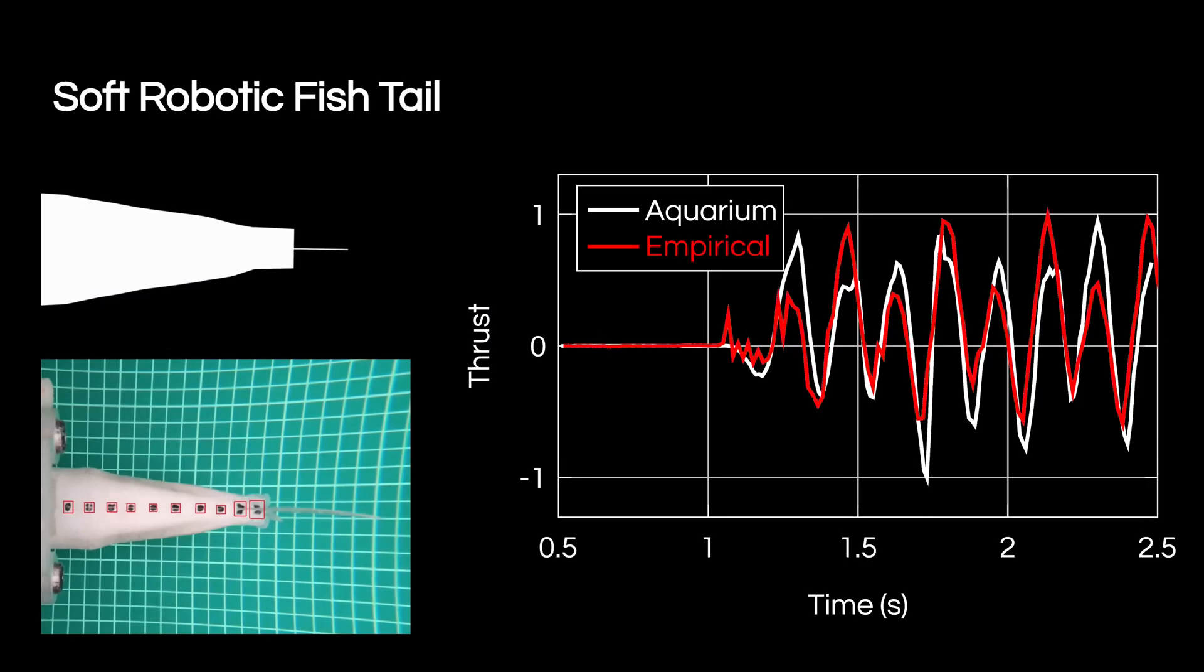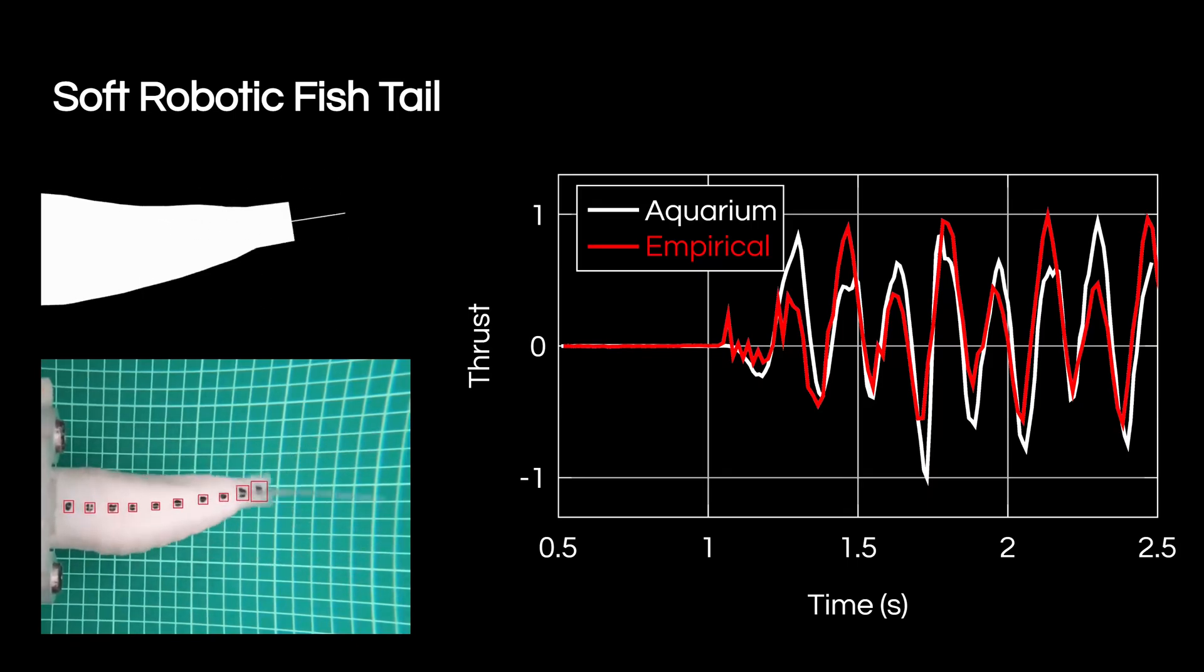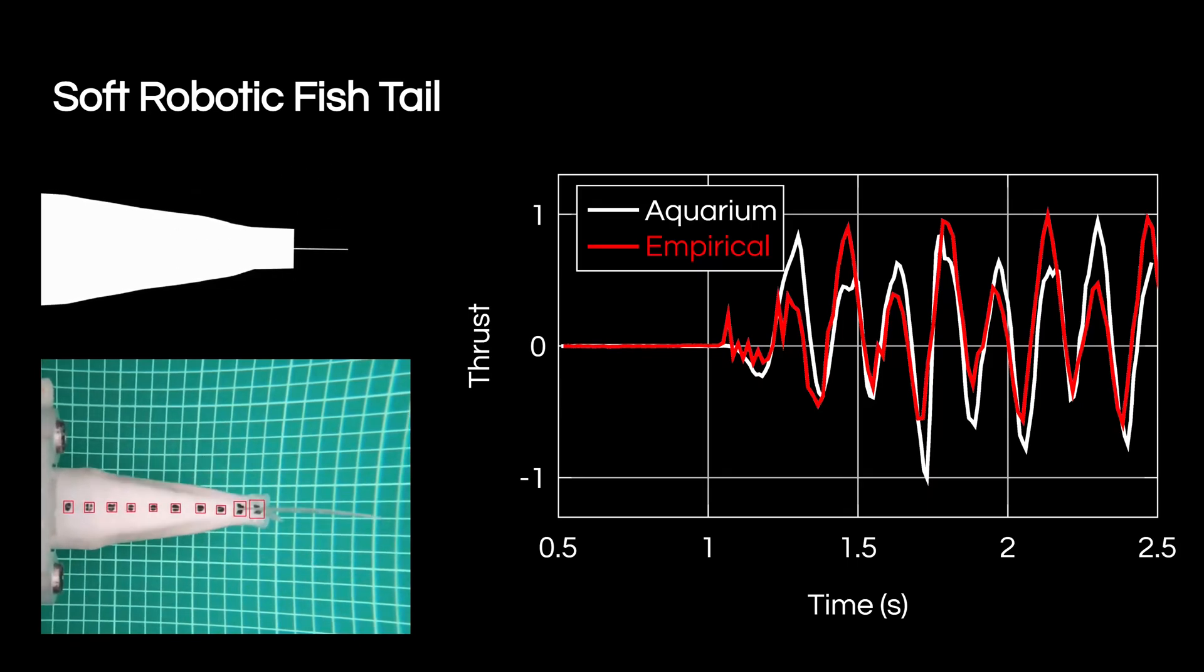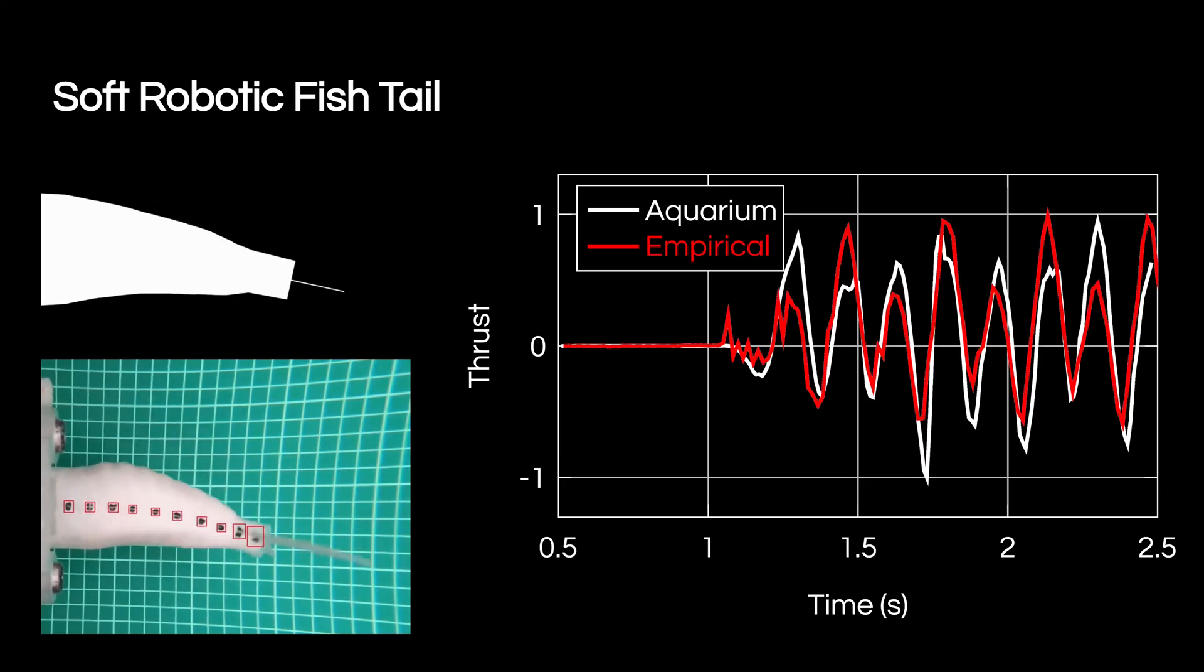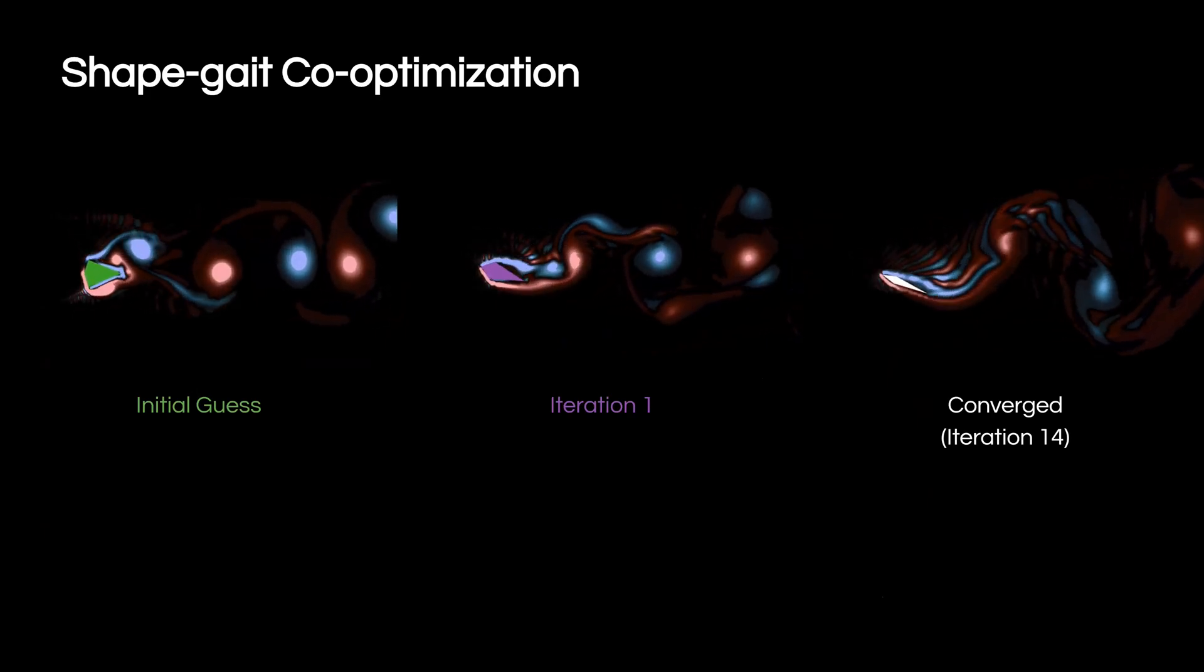We also offer further validation with a sim-to-real study, where we simulate a multi-link approximation of a real-world soft robotic fishtail before comparing time histories of the resulting normalized thrust. Good frequency and phase agreement is achieved between the hardware demonstration and Aquarium. To demonstrate Aquarium's full differentiability,